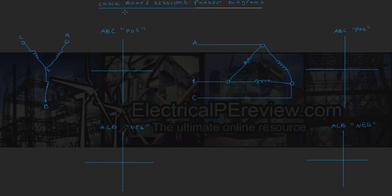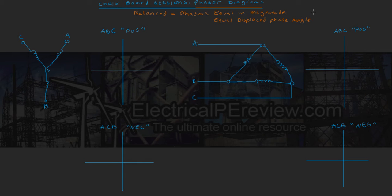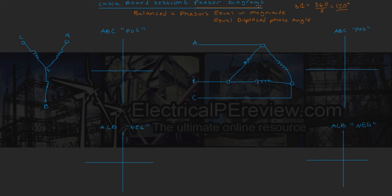What we are going to be talking about is balanced phasor diagrams. Balanced means equally spaced phasors — all three of our current or voltage phasor magnitudes are going to be equal, and all the phase angles are going to be equally displaced. So for three-phase power, we know we've got 360 degrees on our polar graph and three phases, which means each phase has to be exactly 120 degrees apart. So let's start with our Y source.